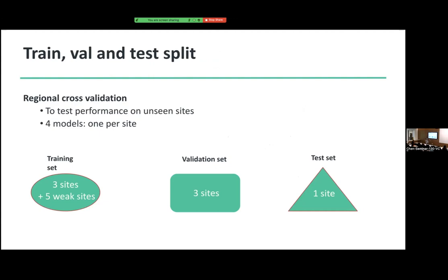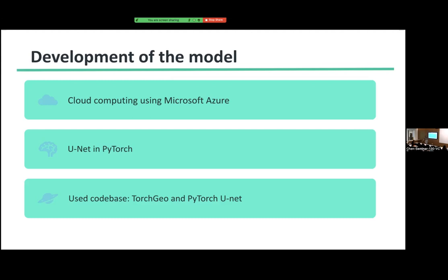Then the development of the model. Like most of you, I used cloud computing in Microsoft Azure with PyTorch. My code base was TorchGeo and PyTorch U-Net for the U-Net architecture. TorchGeo is a satellite imagery code base. The best feature was that it has random tiling — I give it a large image and it randomly selects 64 by 64 patches in the data loader.